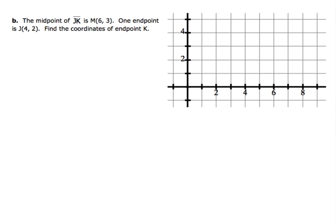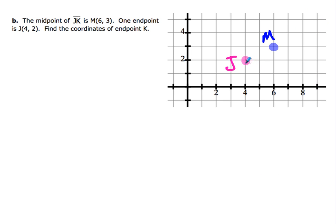So I'm going to go ahead and take a look at this graphically first by plotting both of those points. Based on where point J is and where my midpoint M is, I know that my other endpoint K has got to be somewhere over on the right-hand side of my midpoint M. So what I'm going to do is simply move using slope. From point J, I'm going to go up 1 and to the right 2. For my midpoint, I'm going to follow that same pattern — up 1, to the right 2. So graphically, I'm coming up with point K at coordinates (8, 4).